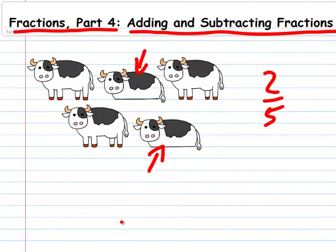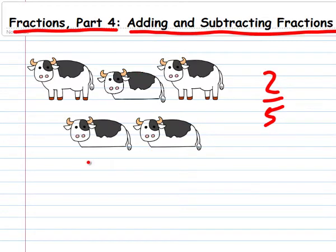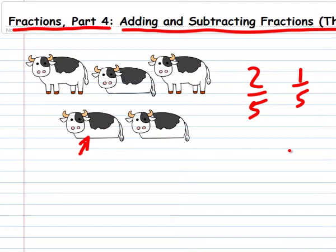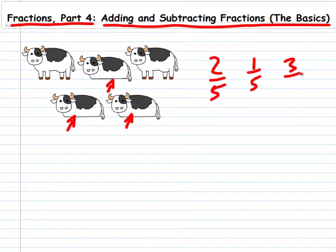Well, what if another cow lies down? Two of the five cows were lying down, two-fifths. One more lies down, that's one-fifth. And how many cows are lying down now? Three. Three of five, three-fifths.